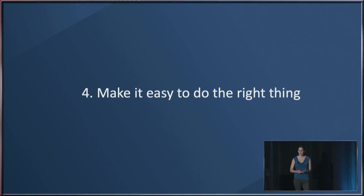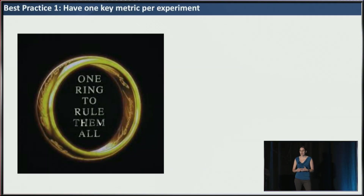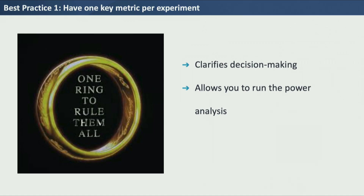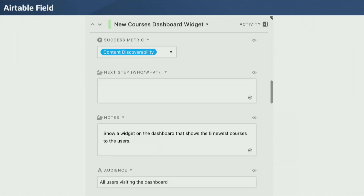My final lesson was to make it easy to do the right thing. One best practice for A-B tests is to have a single key metric per experiment. It helps clarify decision-making, because if you have multiple metrics and one goes up and one goes down, you could be left not knowing what to do. It also allows you to run a power analysis — you need to have the metric and know its rate, and that tells you how long to run the experiment. I'm doing a lot to educate people at DataCamp about A-B testing best practices, but more than that, I'm building it into the process. In our Airtable where we track experiments, each experiment is required to have one and only one success metric, which helps force decision-making and can be matched to something on the dashboard.